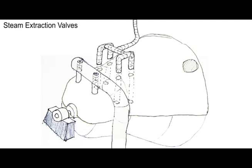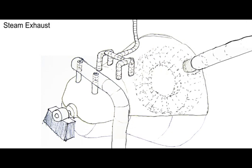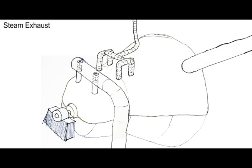The steam extraction valves regulate how much steam is sent to the campus or sent back to the second set of turbine blades. The steam exhaust removes the used steam from the turbine and directs it to the condenser.